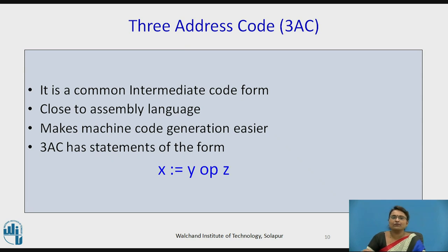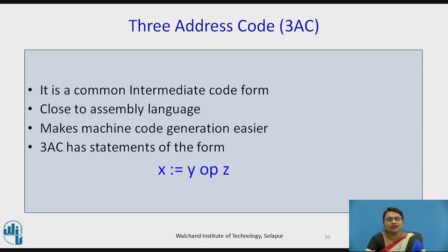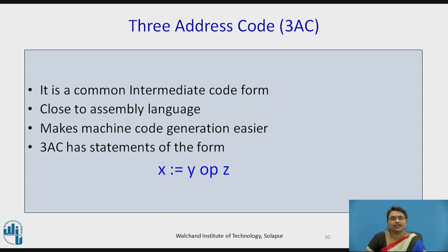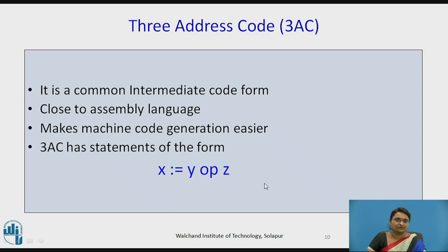Now, talking about three-address code — what do we mean by three-address code? Three-address code is one form of intermediate code. As an intermediate code form, it is close to the assembly language and is used for generating machine code, making it easier for the code generator. The format of a three-address code statement is: X assigns to Y operator Z — an assignment statement where the result is stored in X, with two operands and the operator specified in the middle.